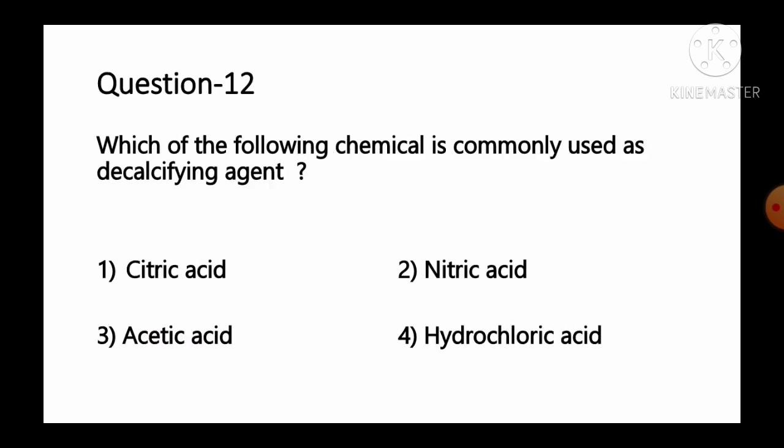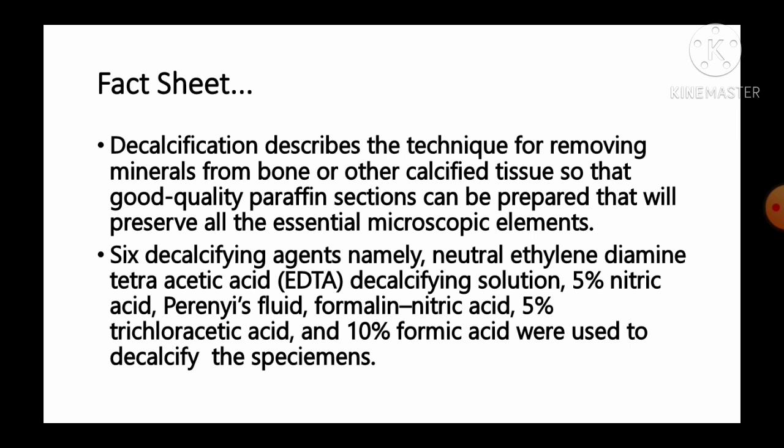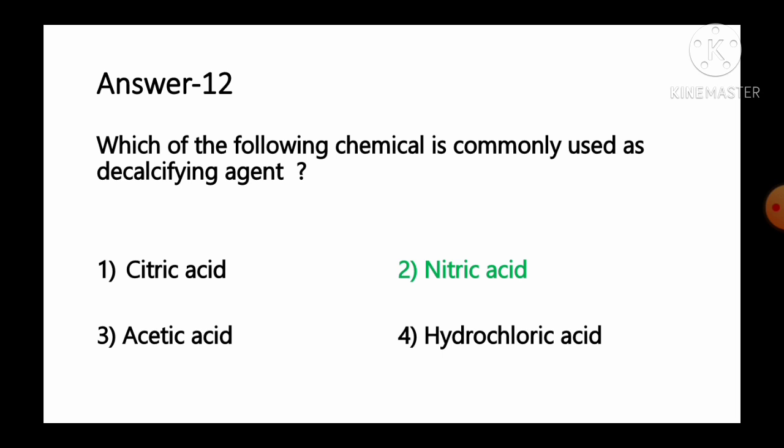Question number 12: Which of the following chemical is commonly used as a decalcifying agent? Options: 1 citric acid, 2 nitric acid, 3 acetic acid, 4 hydrochloric acid. Decalcification describes the technique for removing minerals from bone and other calcified tissues. Common decalcifying agents include neutral EDTA, 5% nitric acid, perenyi's fluid, formic-nitric acid solution, 5% trichloroacetic acid, and 10% formic acid. From the given options, nitric acid is used as a decalcifying agent, so option number 2 is the correct answer.